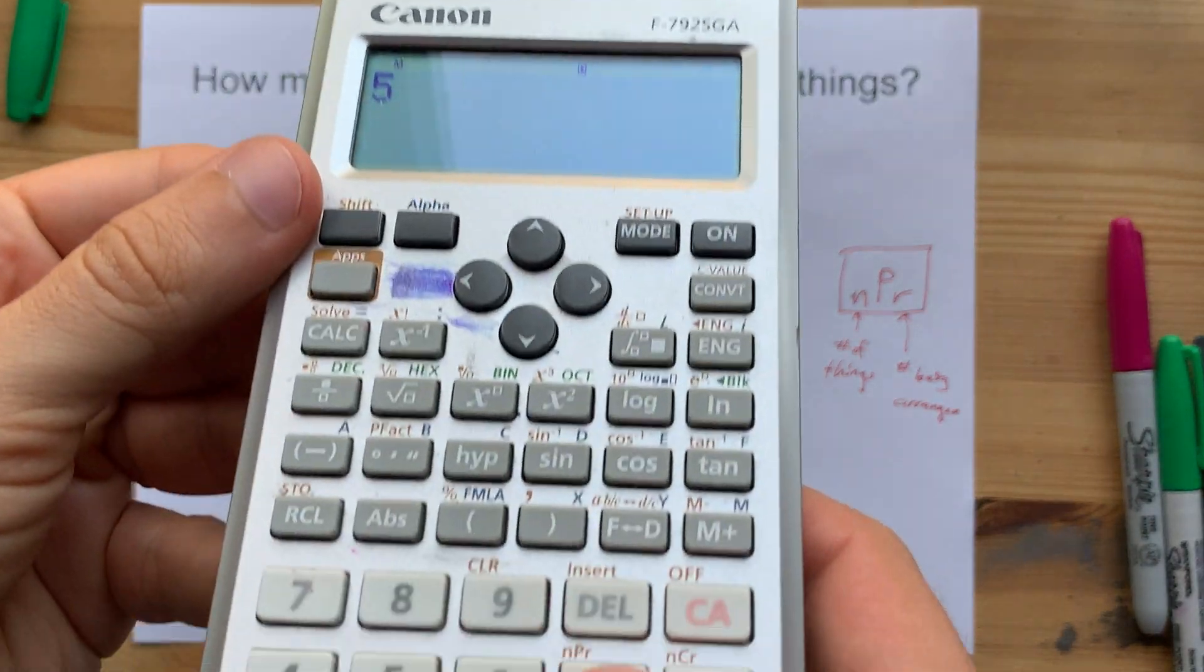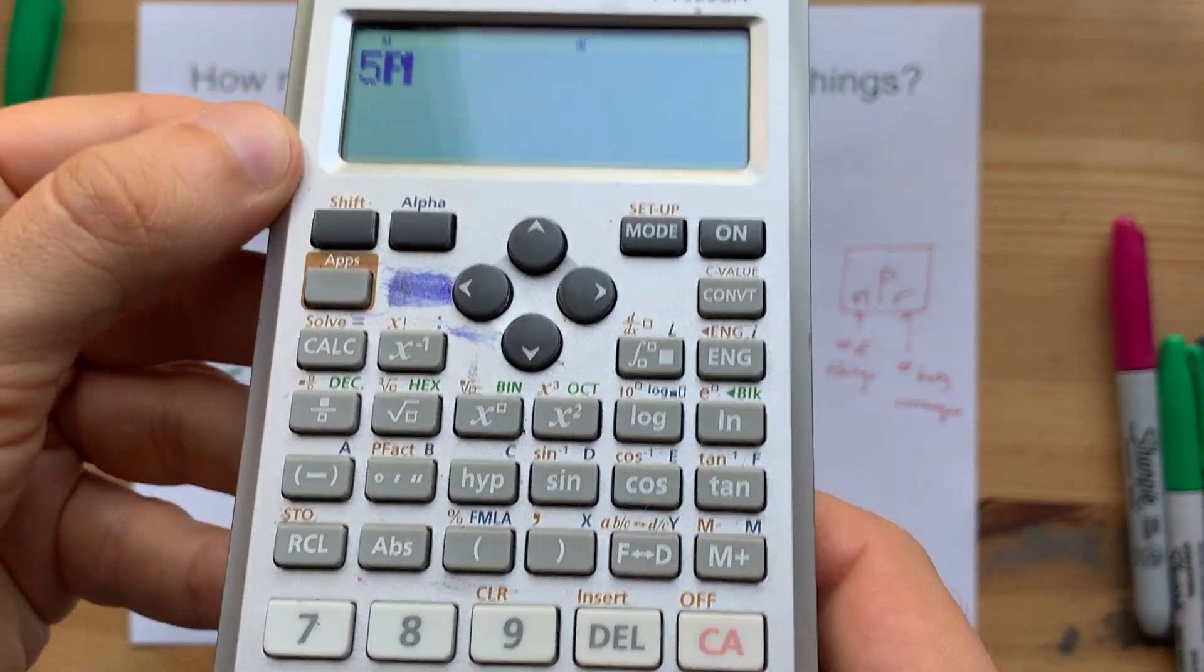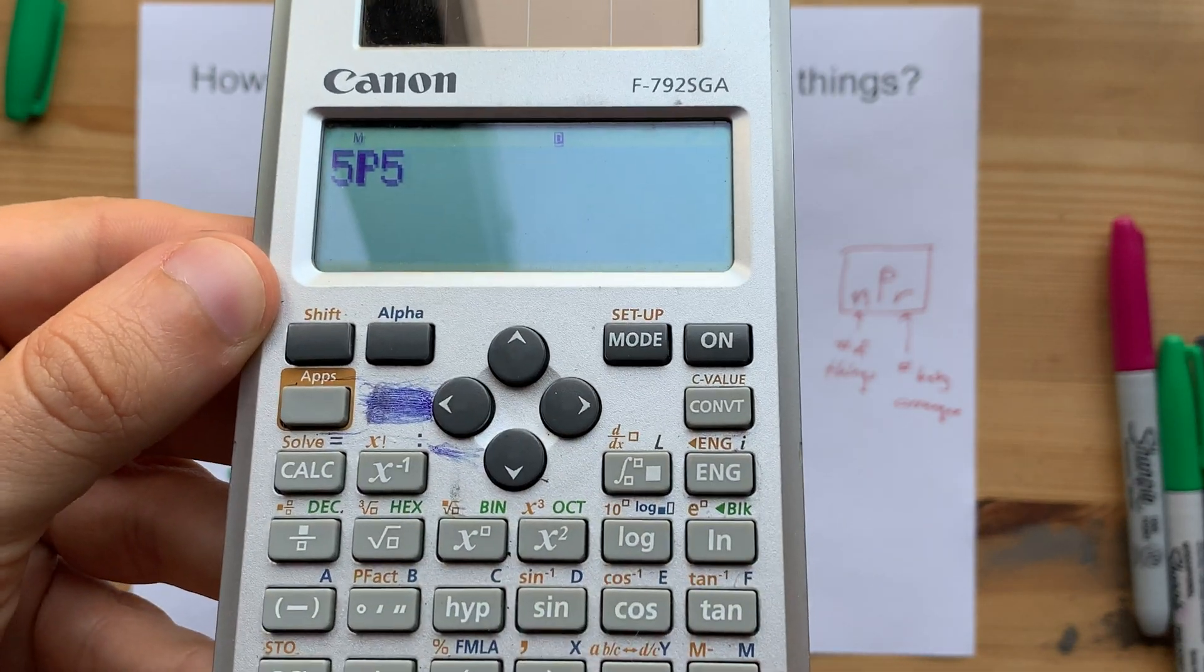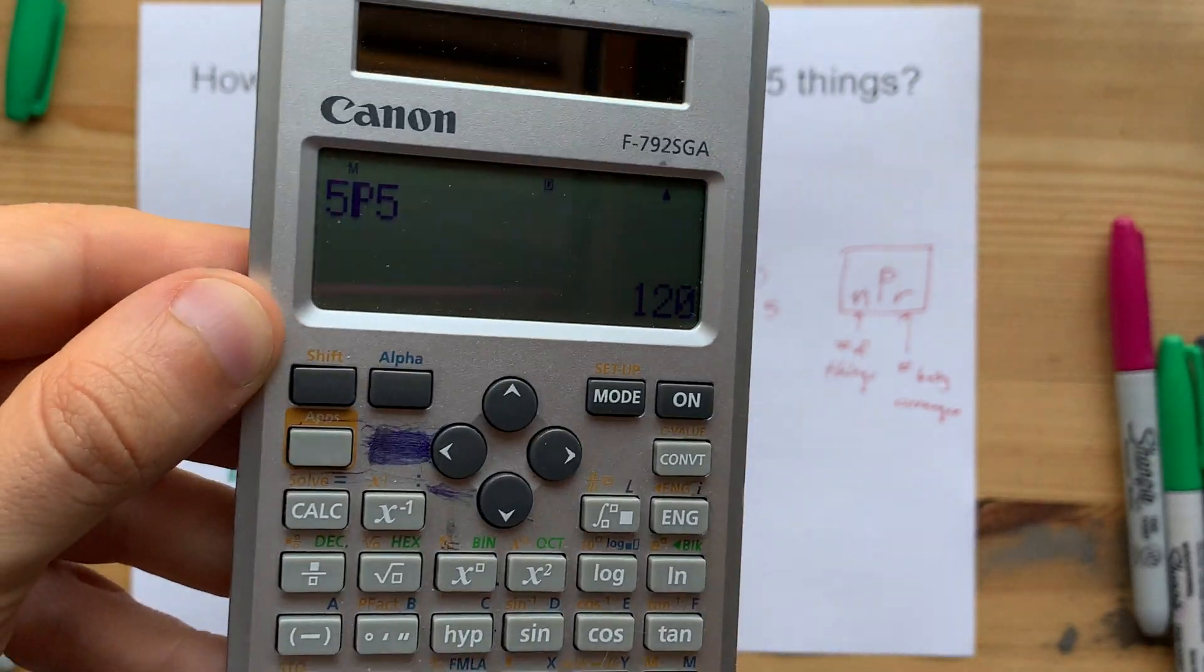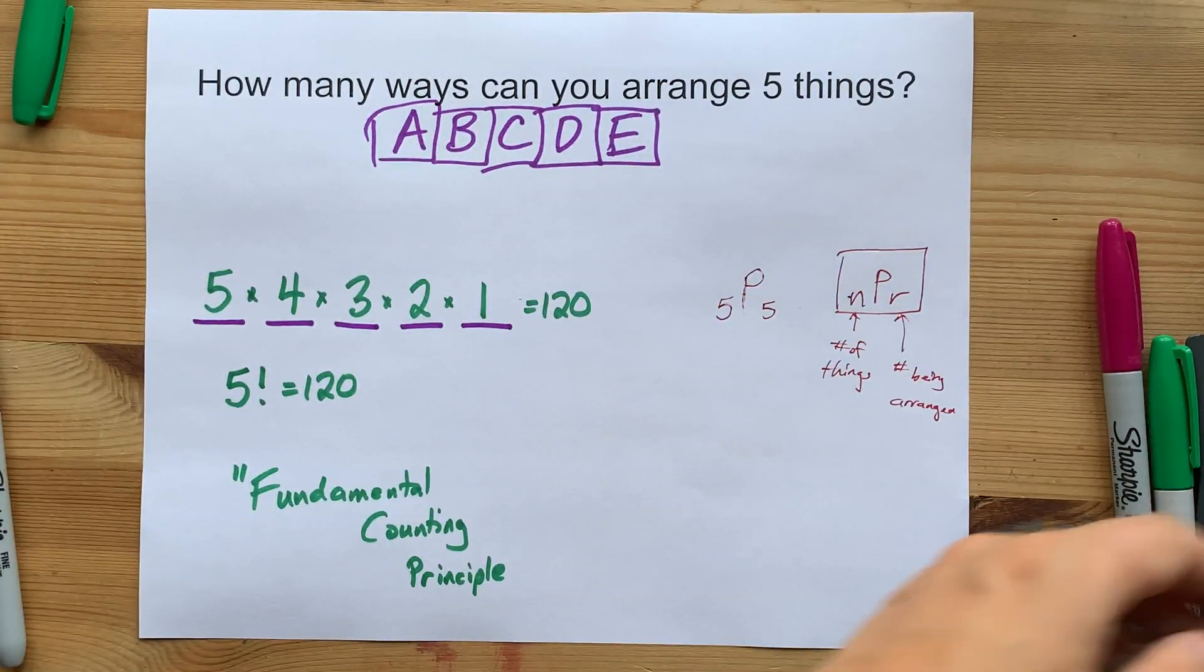Five, here it is. nPr is written there. P5 also gives me 120. Not a surprise. Love it.